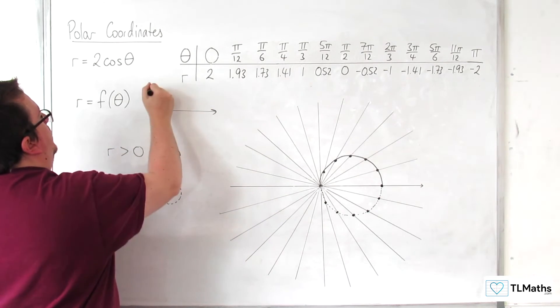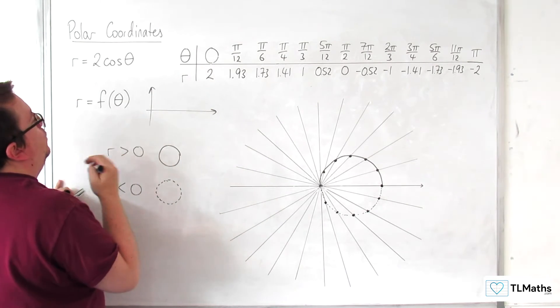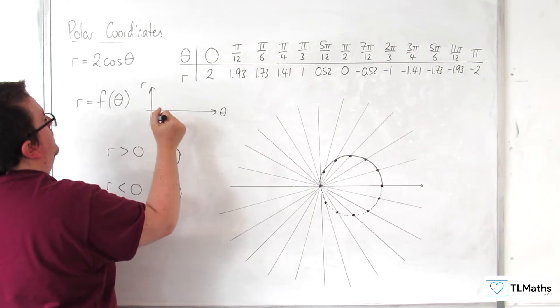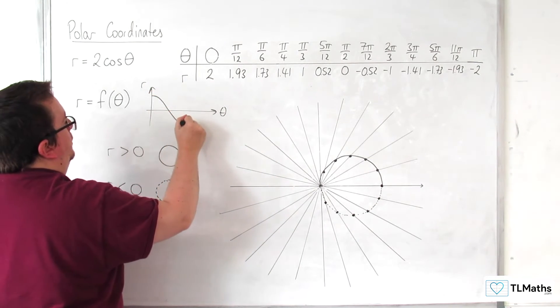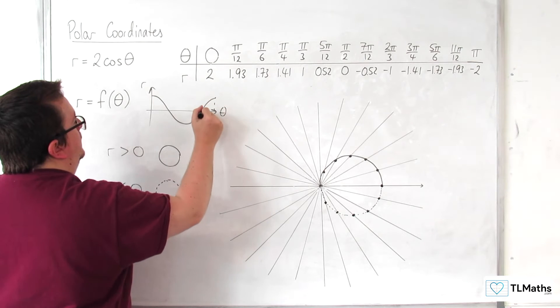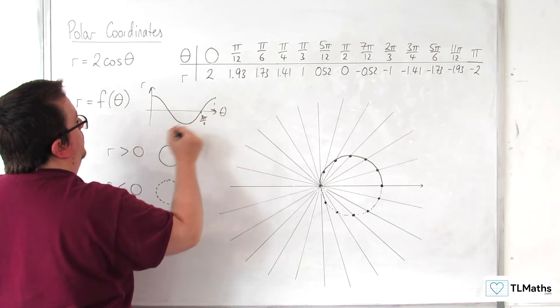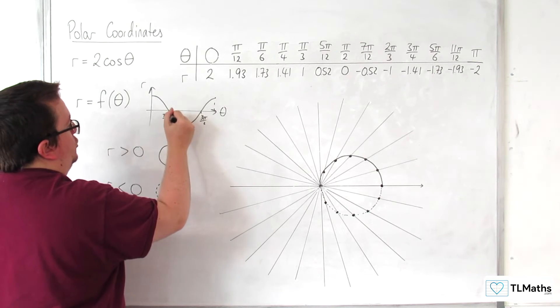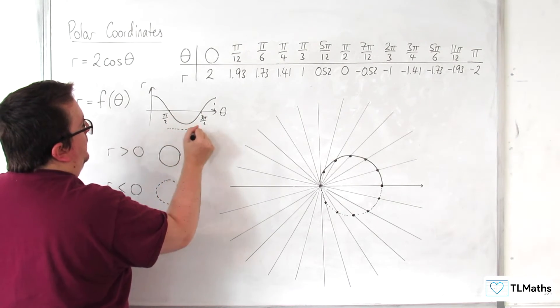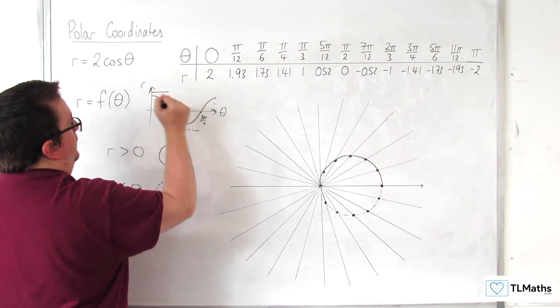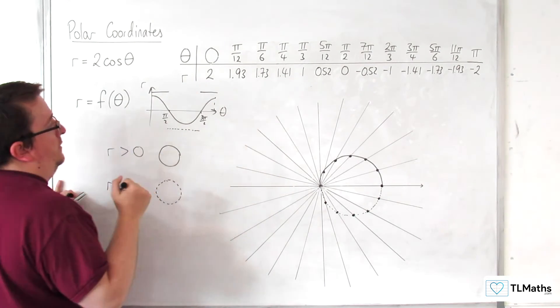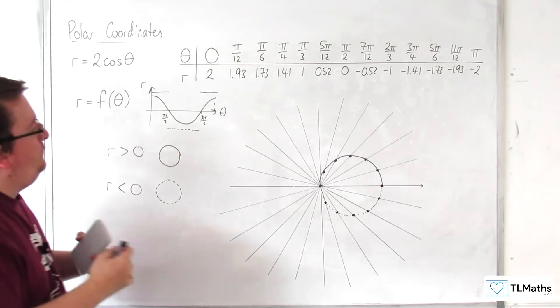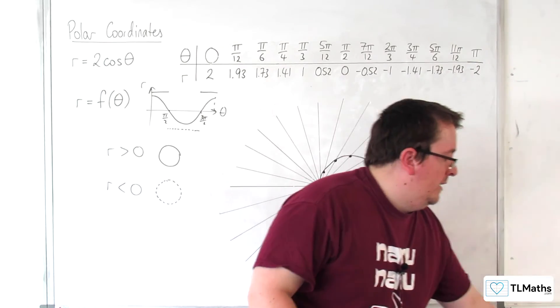So if you were to plot it like this, where you've got theta and r, you know that the curve is going to look like this. So there's your 3 pi over 2, there's your pi over 2. So for this portion of the graph it's dotted, and for this part it's solid, and for that part it's solid. So that's why the curve looks like that.